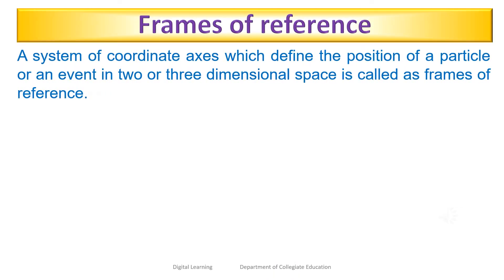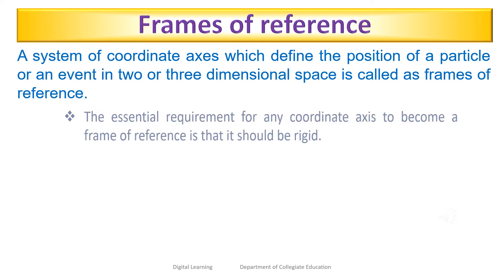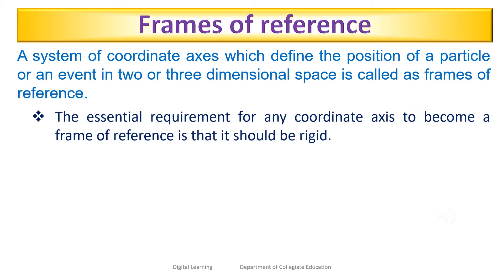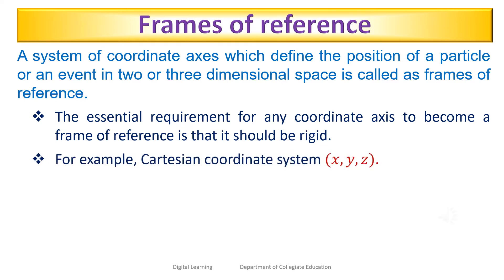A system of coordinate axes which defines the position of a particle or an event in two or three dimensional space is called a frame of reference. The essential requirement for any coordinate axes to become a frame of reference is that it should be rigid. For example, the Cartesian coordinate system.